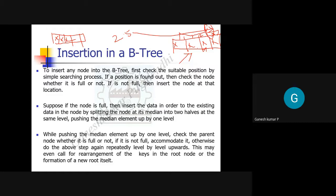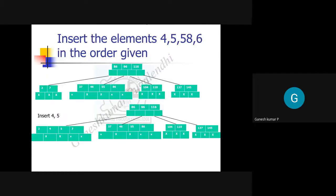If the node is full, you must divide the node into two halves at the median. If it is not full, you insert directly. In case of a full node, divide into two halves and push the median element up one level. If after pushing up, the parent node is also full, you must insert that element into the parent level as well.